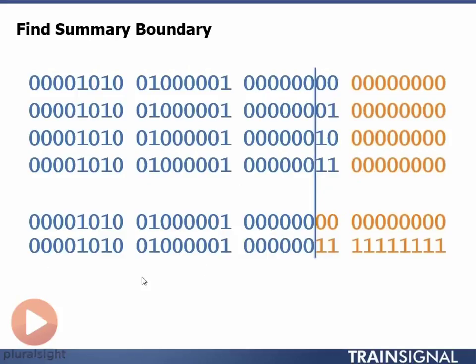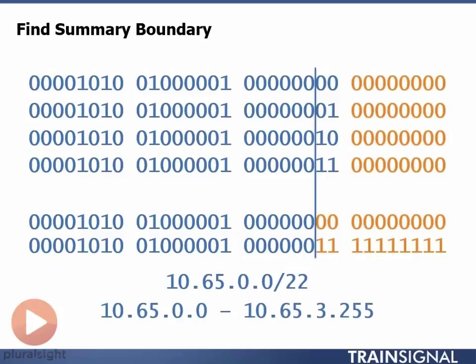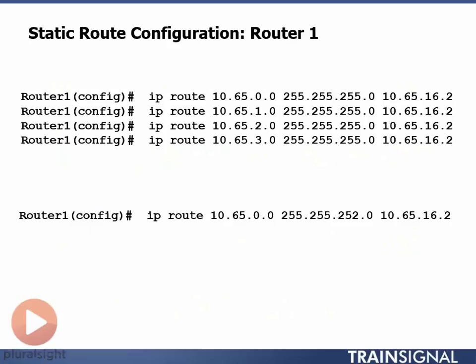And then I find out my broadcast address, put all ones in my host portion, so all zeros in my host portion for my network, all ones in my host portion for my broadcast, first address, last address, ten dot sixty-five dot zero dot zero slash twenty-two, which has a range of ten dot sixty-five dot zero dot zero through ten dot sixty-five dot three dot two fifty-five. This is the exact same range that we needed to cover with our four individual static routes. So instead of writing these four static routes up on top here, we can, as an alternative to entering these four routes, we can not enter those and enter this one single route to reach all four networks.